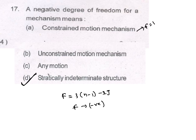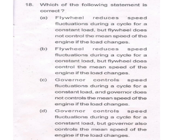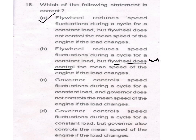Which of the following statements is correct? Flywheel reduces speed fluctuation during a cycle for a constant load — this is correct. But flywheel does not control the mean speed of the engine if the load changes. This is the answer. Governor controls speed fluctuation — that is also wrong. This question was already solved in my ISRO Theory of Machines videos, which you can check.